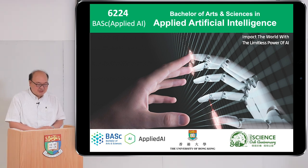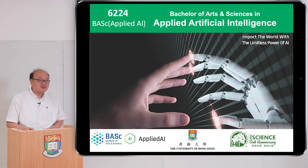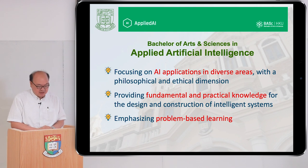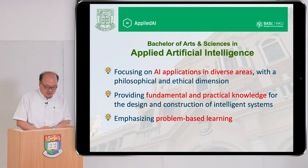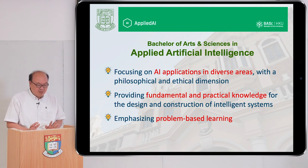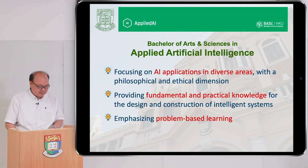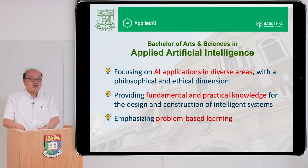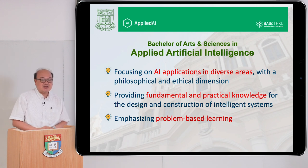Let me first introduce this Bachelor of Arts and Sciences in Applied Artificial Intelligence. As Professor Yao mentioned, this is a new program — we launched the first batch last year. This program aims to focus on AI applications in various areas, and we also focus on the philosophical and ethical dimension as well. The program provides fundamental and practical knowledge for the design and construction of intelligent systems, and we emphasize problem-based learning. As you can see, this is so-called Applied AI, so we definitely emphasize the application part.